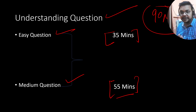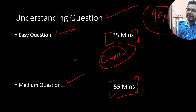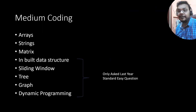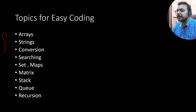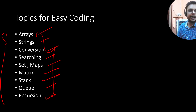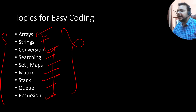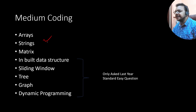So there is one easy question with 35 minutes and a medium question with 55 minutes. We'll discuss the compiler issue later. For easy coding, the topics you need to target are: arrays, strings, conversion, searching, sets and maps, matrix, stack, queue, and recursion. These are the main topics because mostly in the easy coding part you will get a question from these topics only.